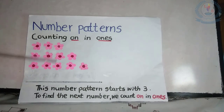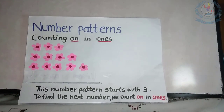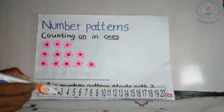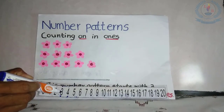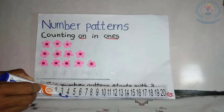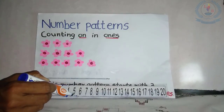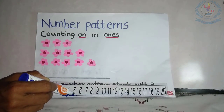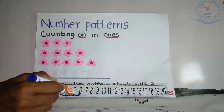Hey children, now I am going to teach you about number patterns. Can you tell me what comes next? We can use the number track and find the answer. In the first row there are 3 flowers. In the second row there are 4. From 3 to 4, we can draw an arrow. Count on in 1's. Next, 5. You can draw an arrow. Count on in 1's. To find the next number, we count on in 1's.